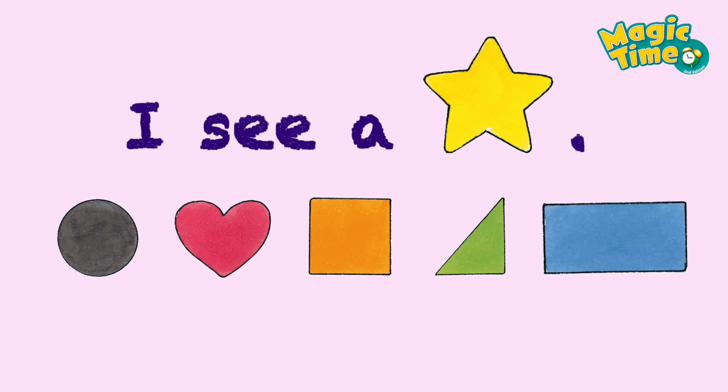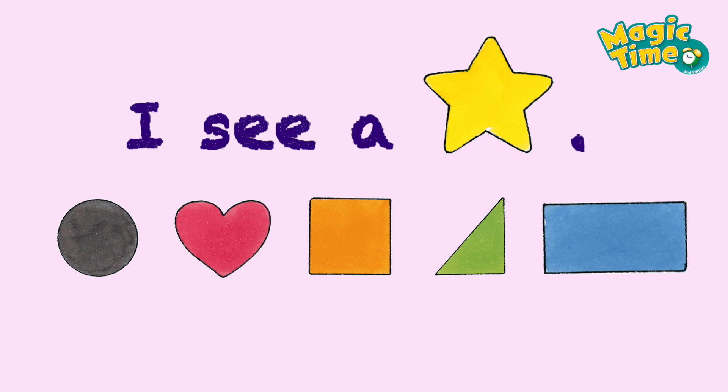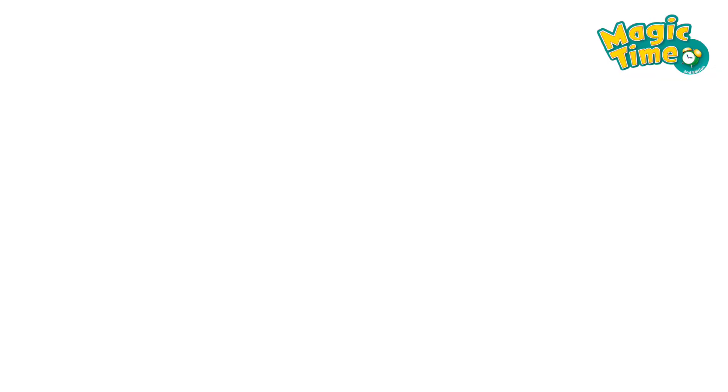I see a star. I see a circle. I see a heart. I see a square. I see a triangle. I see a rectangle. Hooray!